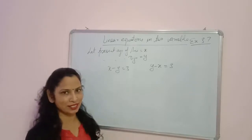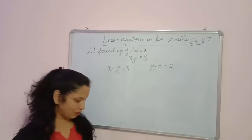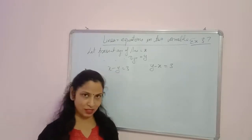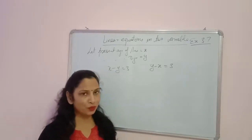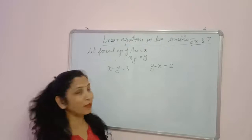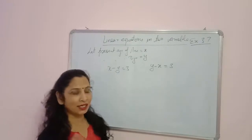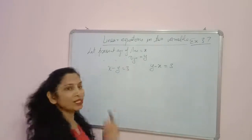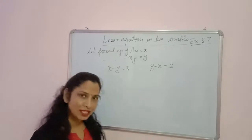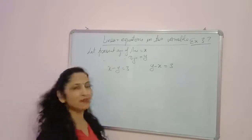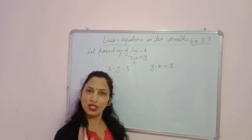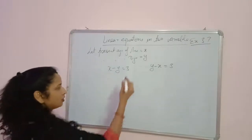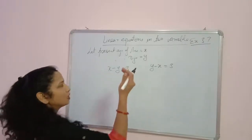The first question: the ages of Ani and Biju differ by 3 years. We don't know which one is bigger — Ani or Biju. Let the present age of Ani be x and the present age of Biju be y. Since we don't know which is greater, we have to make two equations for this statement.